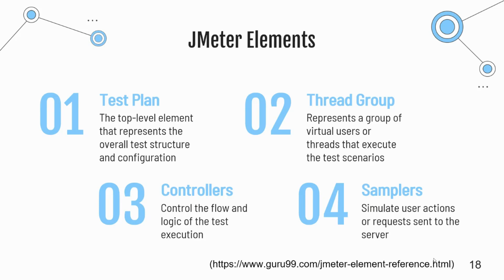The thread group represents a group of users or threads that simulate concurrent user activity on your application. It defines the number of threads, ramp-up time, and loop count, determining how many virtual users participate and how they are distributed over time. Controllers define the flow and logic of your test — they control the order in which elements are executed. Different types include simple controller, loop controller, and if controller. Samplers are responsible for sending requests to the application under test, simulating user actions such as HTTP requests, form interactions, or database queries.